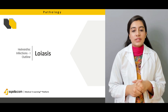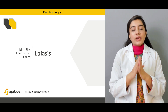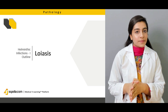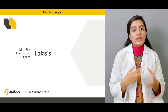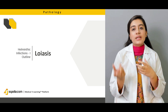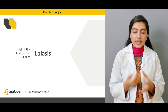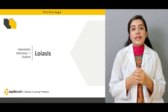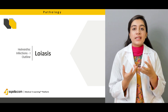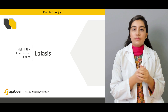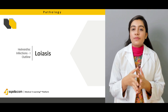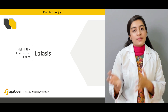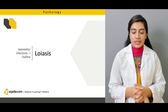Then we have loiasis. This is a different disease causing different types of signs and symptoms, involving different body parts. We will discuss how it involves them, the pathology, pathophysiology, morphology of the organism, and the clinical signs and symptoms of the disease.